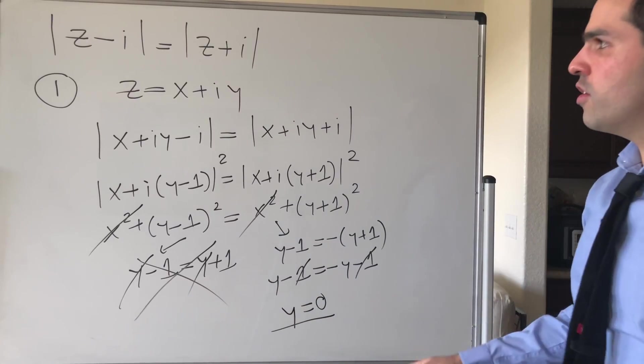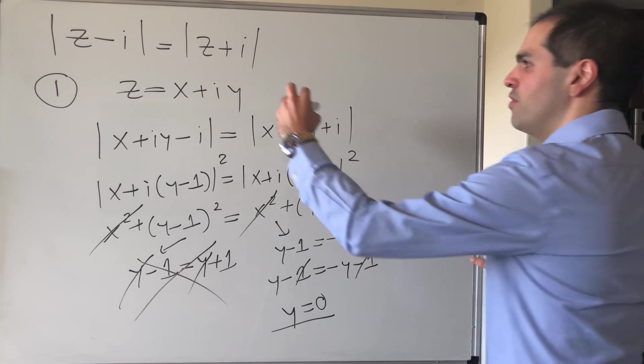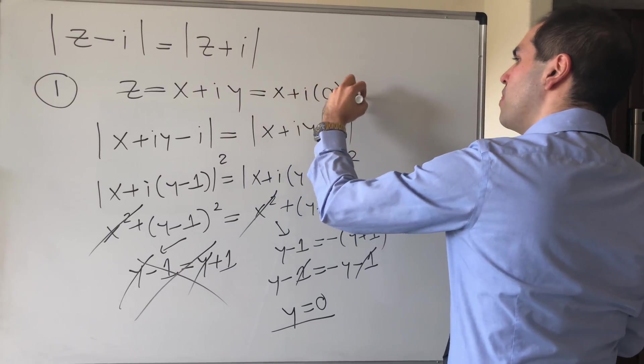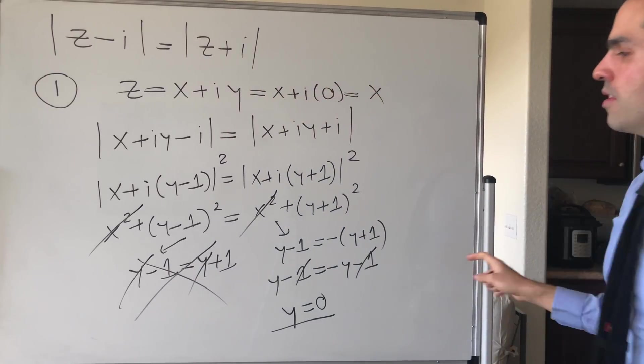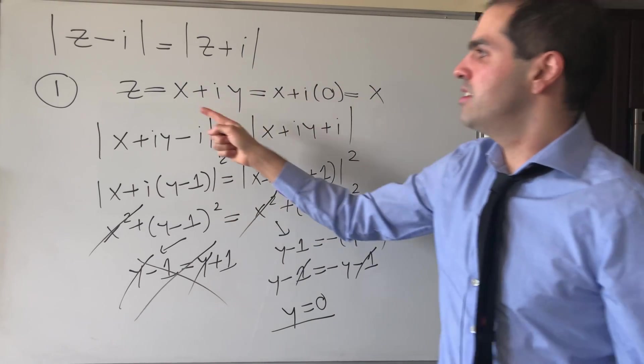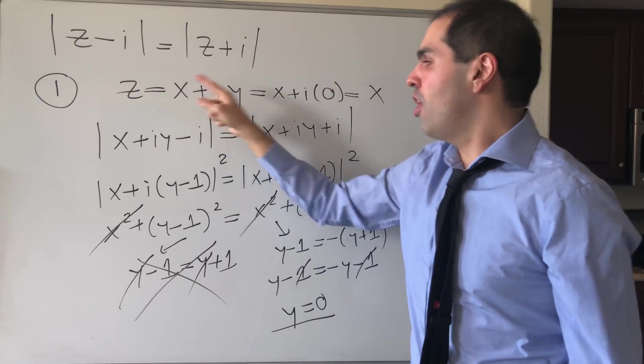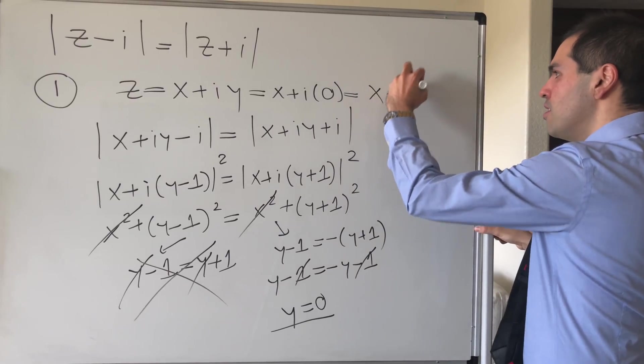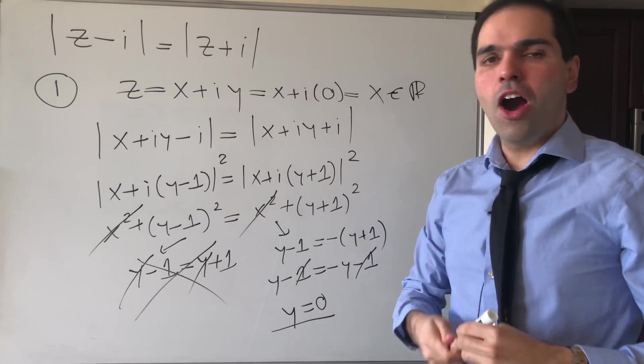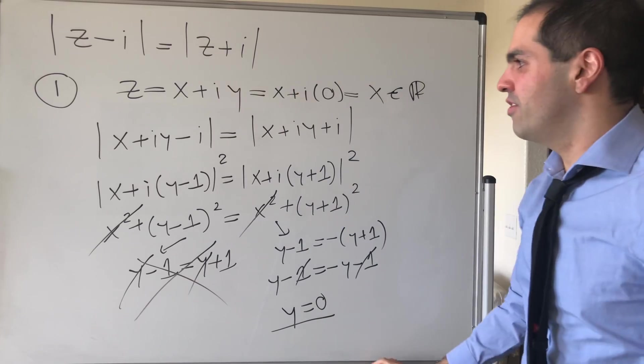So what can we conclude? If z solves this equation, then z must be of the form x plus i, 0, and x. In other words, and I know it seems we're just using different symbols, but what is this saying? The only solutions to this equation are all the real numbers. So in other words, there are no complex numbers with non-zero imaginary part that solve this.